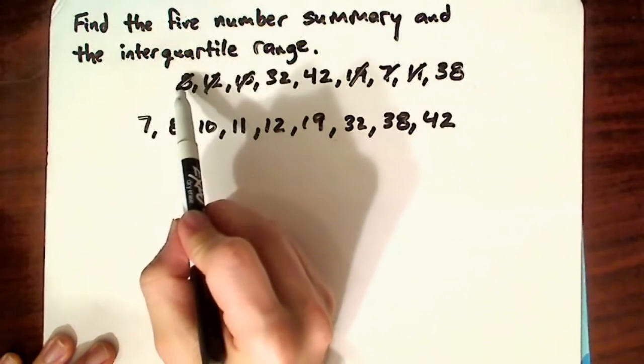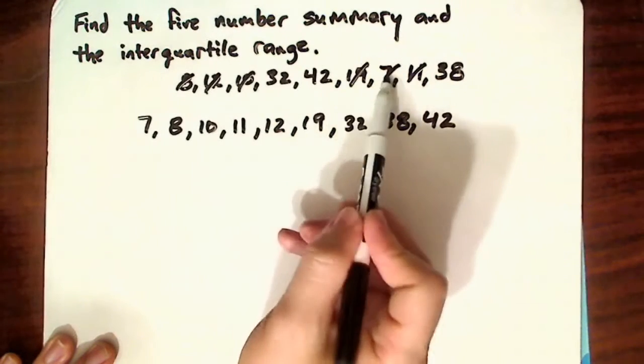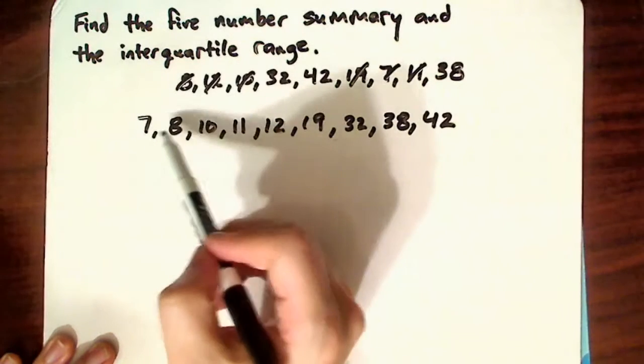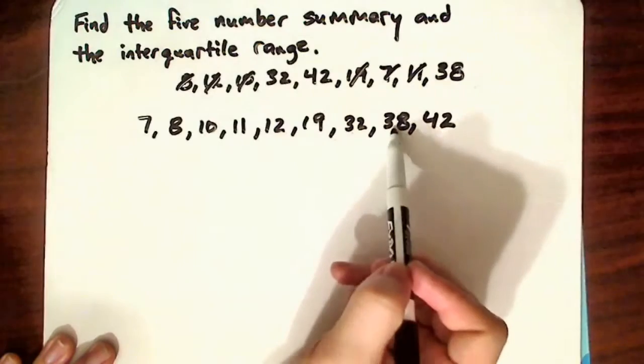Also, to double-check, what you can do is count. So 1, 2, 3, 4, 5, 6, 7, 8, 9. And again, 1, 2, 3, 4, 5, 6, 7, 8, 9.